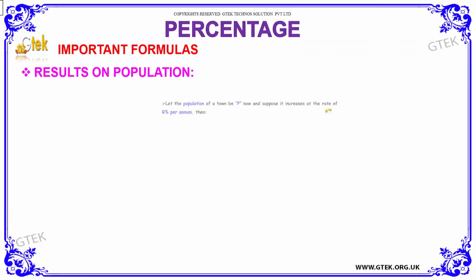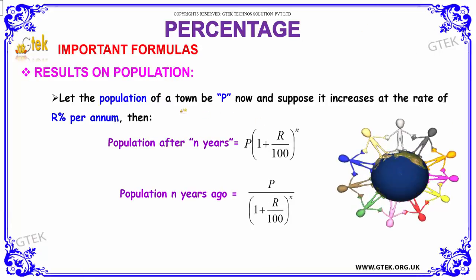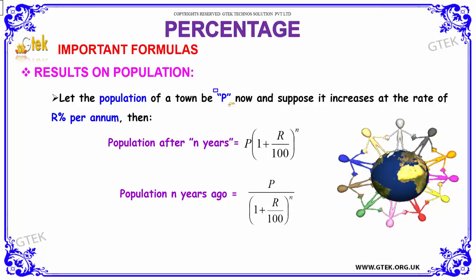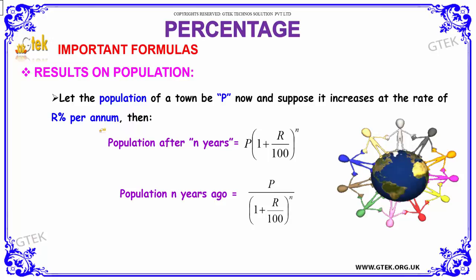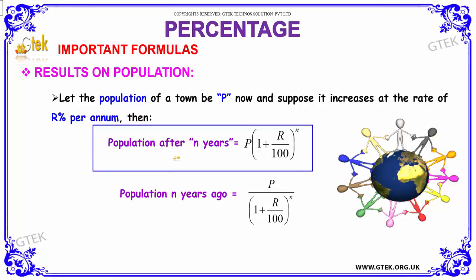Moving on, we can also use percentage to calculate the population of a town. We have the population of the town to be P initially, and suppose it increases at the rate of r percentage per annum. Then the population of the town after n years can be calculated using the formula: P into (1 plus r by hundred) the whole power n.